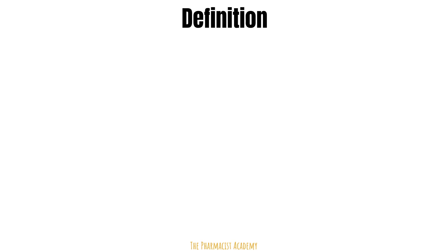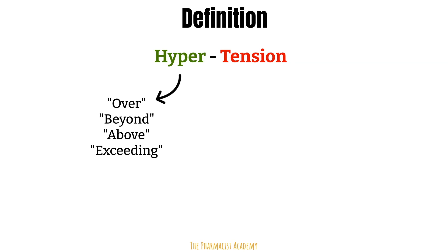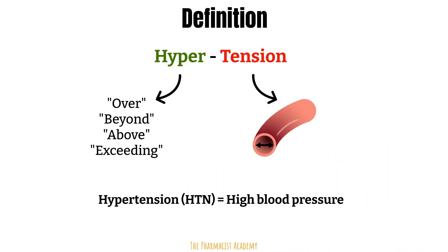The definition of hypertension is in the word itself. Let's break it down to hyper and tension. When something is hyper, it's over, beyond, above, exceeding. Tension in this case is referencing blood vessels, the pipes that blood flows through. So the tension of the blood — the force or pressure against the vessel walls. Hypertension is when there is a chronic increase in this tension or force or pressure against the vessel walls. This is why hypertension can also be referred to as having high blood pressure.